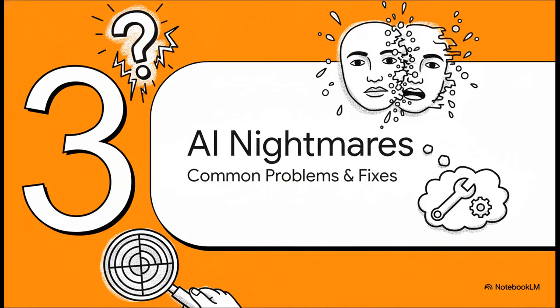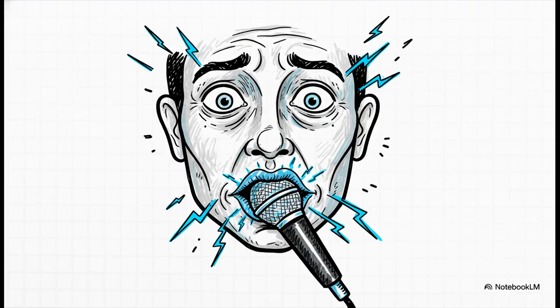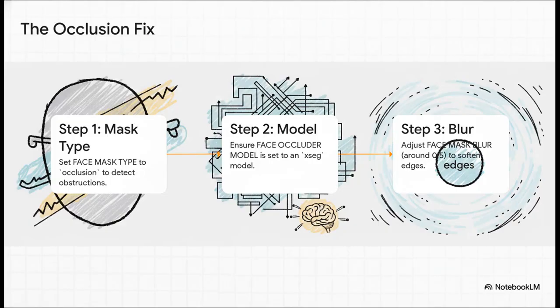Let's tackle the three most common AI nightmares — those awful glitches that completely ruin a perfect swap. The first: when a singer's microphone merges with their lips, or someone waves their hand and it becomes part of their cheek. That's the classic AI failure called occlusion. The fix is actually elegant. First, change the face mask type to occlusion — you're telling the AI that things might pass in front of the face. Then make sure the occluder model is set to ext-seg. Finally, add just a little bit of blur to the mask edge for a seamless, soft blend. Problem solved.